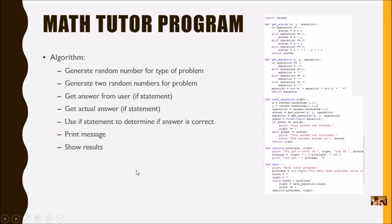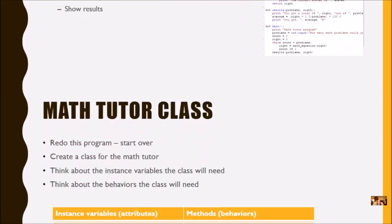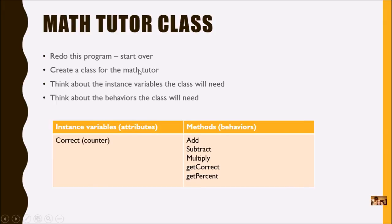Today we're going to take a look at this program and how we might do it with a class. We're going to start over — not modify the program you already did, but start fresh. We are going to create a class for the math tutor. Think about the instance variables the class will need. When we create this class as its own entity, what will it need to complete these math tutor problems? We also need to think about the behaviors of the class.